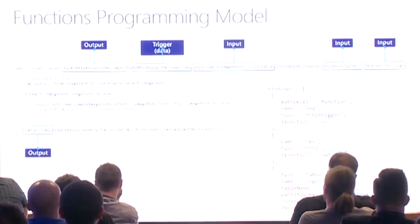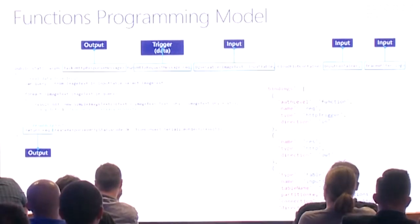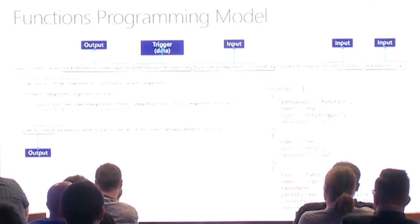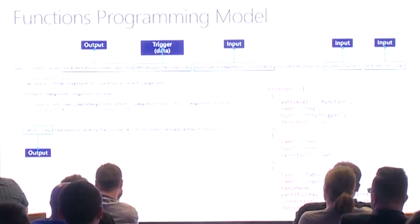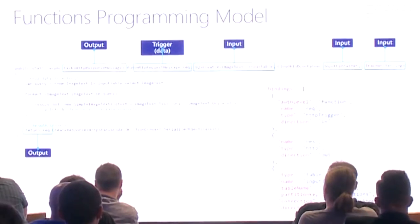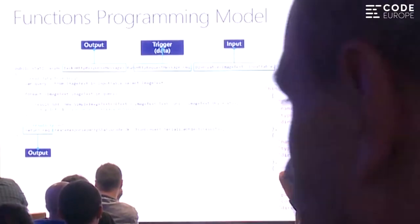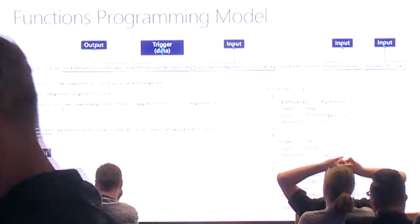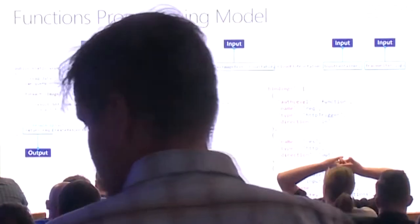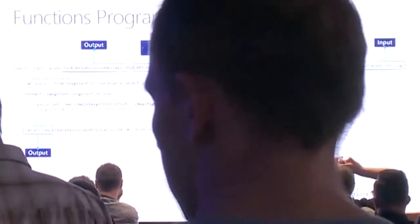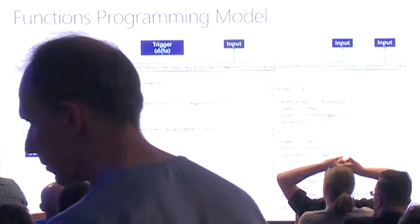After the code runs, I output an HTTP response message — status 200 with a message — and return it. Separately there's a function.json file with the actual bindings: the trigger binding for HTTP, output bindings for the HTTP message named 'res', and an input binding for the table. The connection string is how it connects — no SDK setup, no authentication code needed.